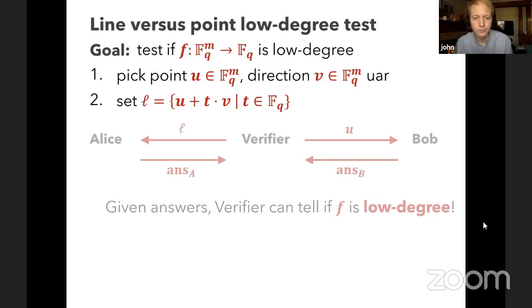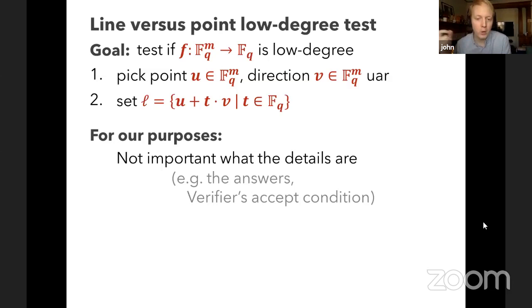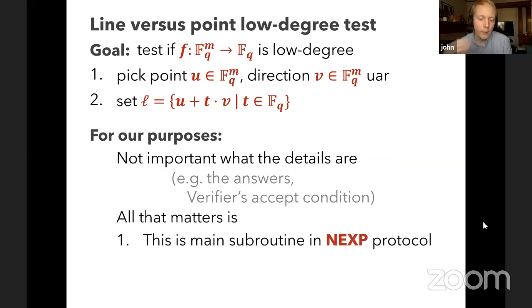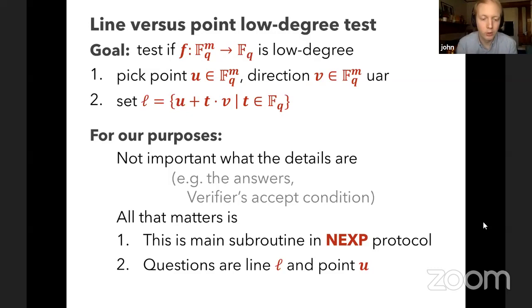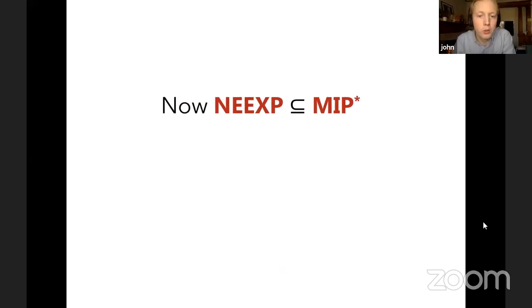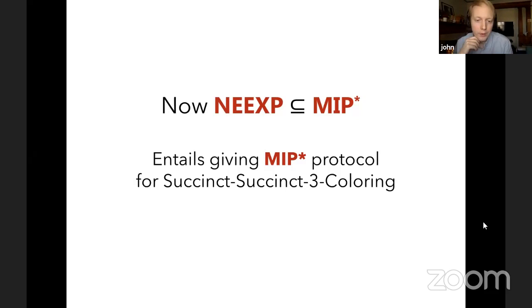The details of the answers don't matter much for our purposes. What matters is that this line versus point low degree test is the main subroutine in the MIP protocol for NEXP, and the question format consists of a line L and a point u located on the line. That was MIP equals NEXP. Now I'll move on to MIP* containing NEEXP, where we'll see introspection and PCP composition.